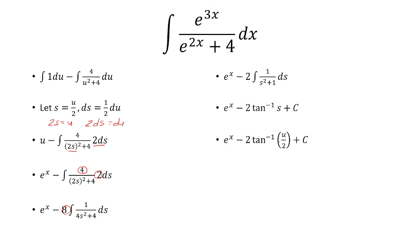Remember, s we said was u over 2, and then u was e to the x. So our final answer is e to the x minus 2 times inverse tangent of e to the x over 2 plus c.